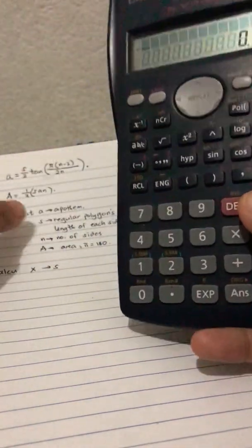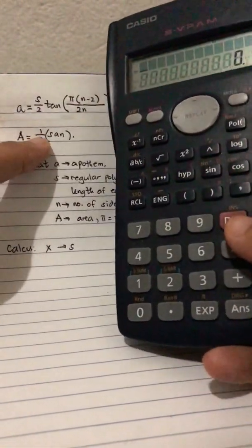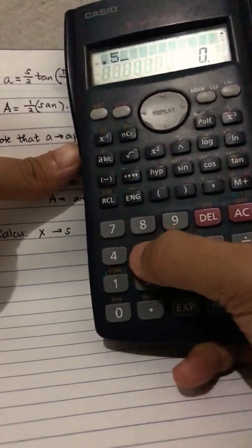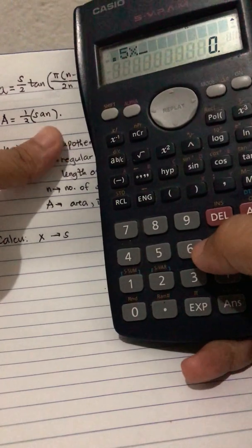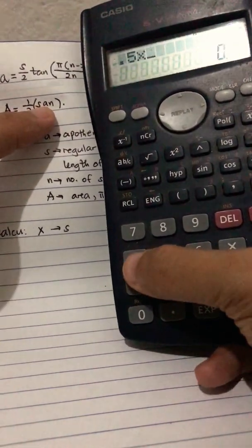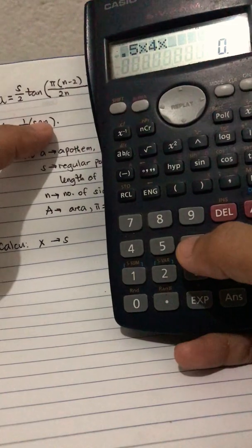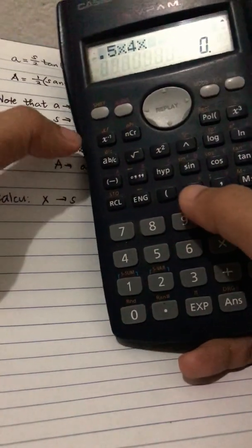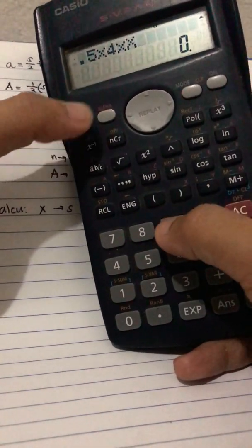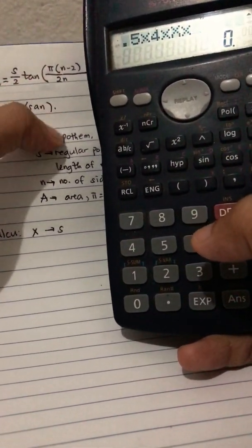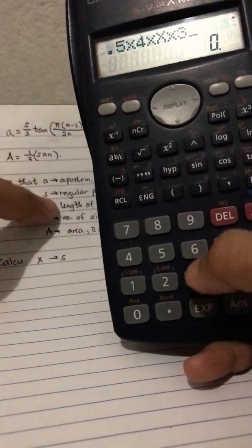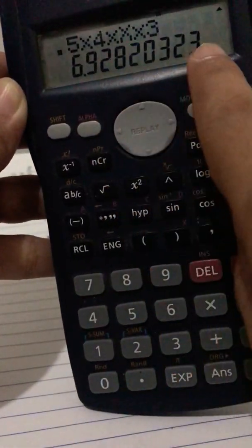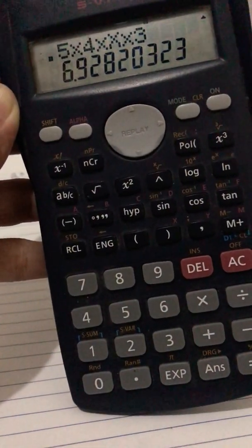Okay, so to get the area, it says area would be one half or 0.5. So that's 0.5 times our s, which in this problem is 4, times our a or the apothem, which was actually the letter x that we saved, so that's alpha x times n. And in our problem for a triangle, that would be 3. That's why we have 6.928 and so on, or 6.93 in our problem.